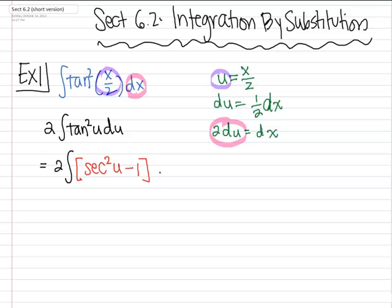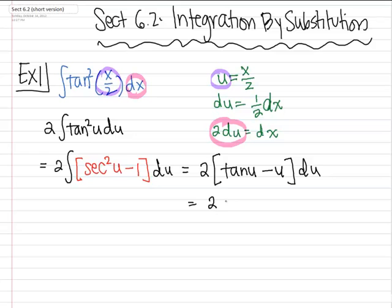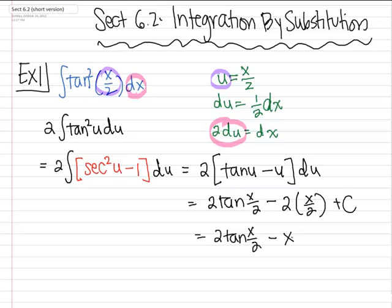If you don't remember this, you'll get stuck. Whenever you see an integral of tangent squared, replace it with secant squared minus 1. Now we can integrate: the integral of secant squared is tangent, and the integral of 1 is u. Then back-substitute to get 2 tangent(x/2) minus x plus C. Make sure the plus C appears the second you finish integrating — don't leave it off and throw it in at the last line.